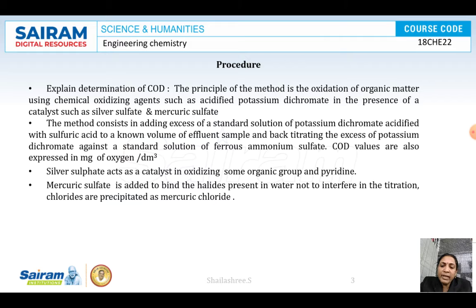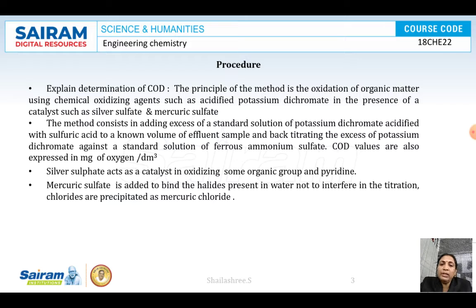For this, we need to prepare a standard ferrous ammonium sulfate (FAS) solution. Weigh the FAS and transfer into a volumetric flask, add 2 test tubes of dilute sulfuric acid, make up the solution accurately up to the mark and mix well.